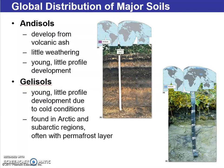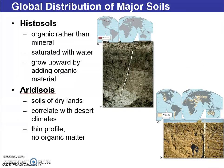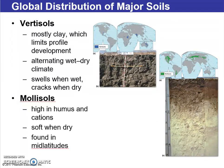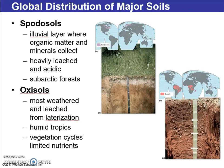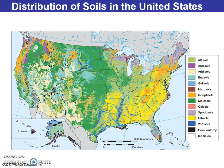Andisols develop from volcanic ash. Gelisols have little profile development due to cold conditions. Histosols are rich in organic matter in interior growth areas. Aridisols are soils of dry lands — you can see deserts on the west coast. Vertisols are mostly clay. Mollisols feature humus and cations. Alfisols are mature with surface clay. Ultisols are weathered and leached of nutrients. Spodosols have an illuvial layer seen in the interior of South America and Sub-Saharan Africa. Oxisols are mostly weathered and leached through lateralization. A detailed map also focuses on soil distribution within the United States.